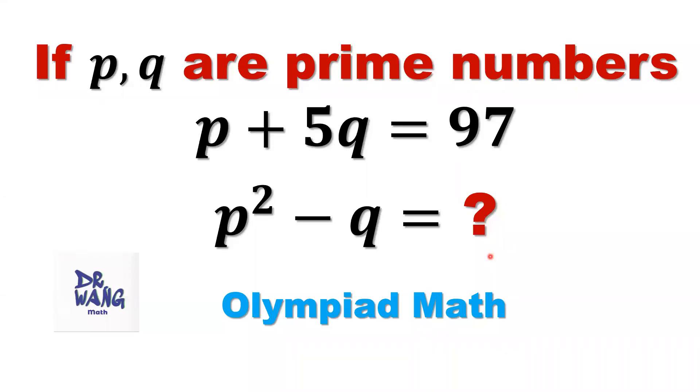Hello everyone, I'm Dr. Wen. Here is the question. If two numbers, p and q, are prime numbers, satisfy the following condition: p plus 5q equals 97.